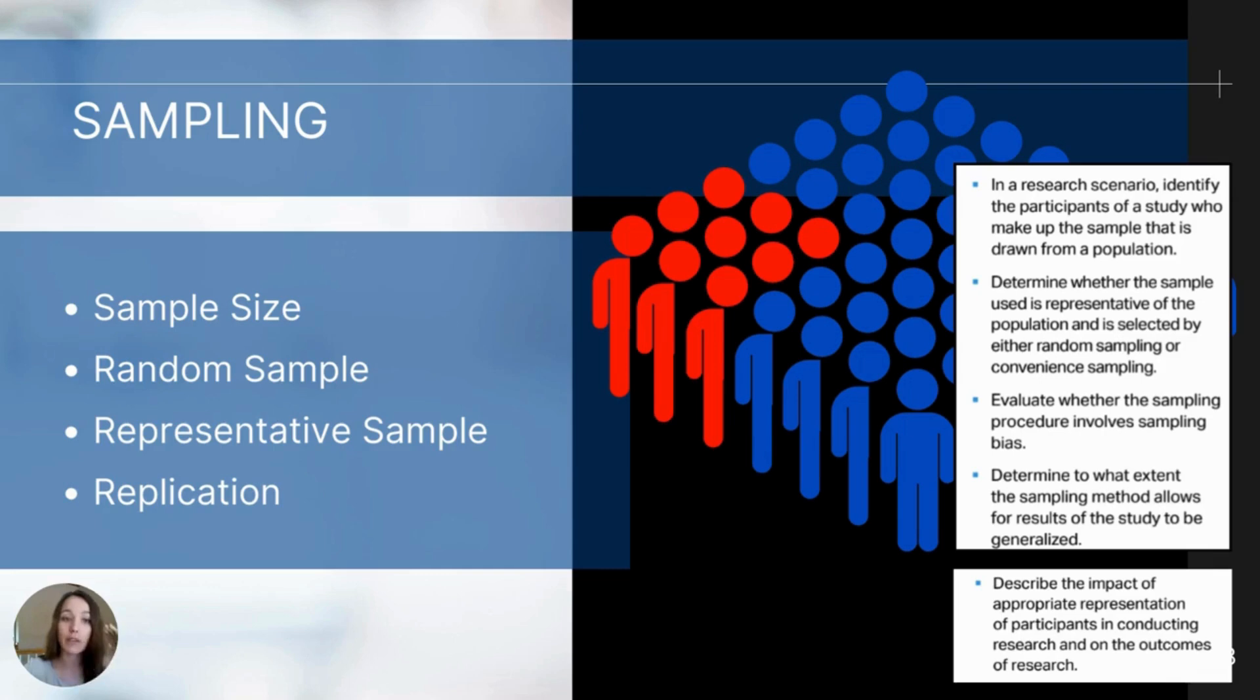So rather than going into depth about these different parts, since you already know, I will just give you a few tips, things that you should be aware of when you are looking at the samples being used. So the first, you should notice sample size. A sample size that is larger increases the likelihood that it represents the population better. So for example, if you study a population of 1000 people and your sample is only 10 people, that might not reflect the population as well as if you drew a sample of 350 people.